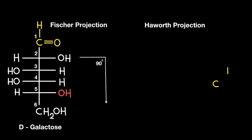So let's begin by drawing this cyclic structure, beginning with carbon number 1 and the aldehyde functional group. Let's now move on to carbon 2. You may recall that these Haworth projections, these cyclic structures, look hexagonal when dealing with monosaccharides such as galactose and glucose.